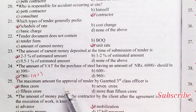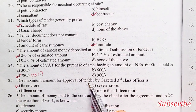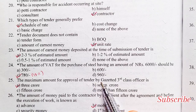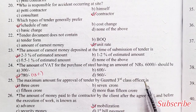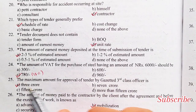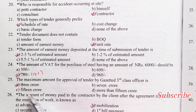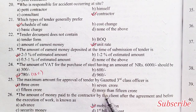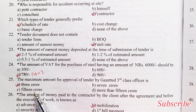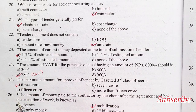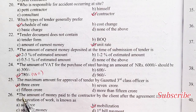The maximum amount for approval of tender by a gazetted third class officer is: 3 crore, 7 crore, 15 crore, or more than 15 crore. Option A is the right answer — 3 crore.